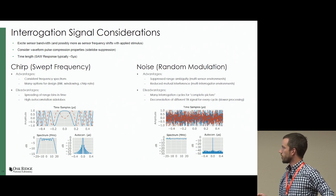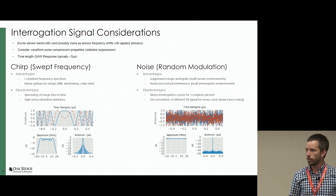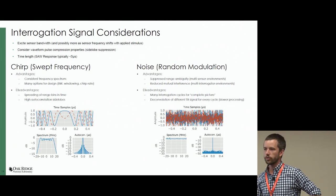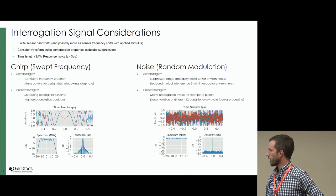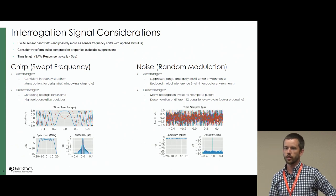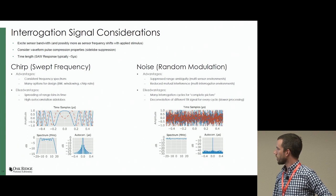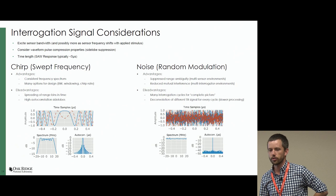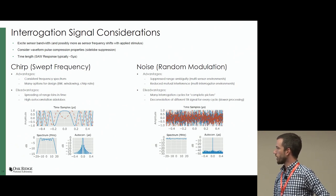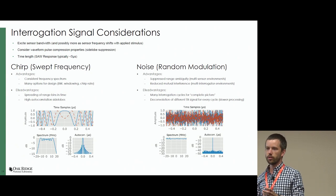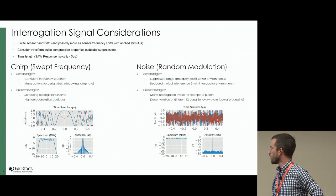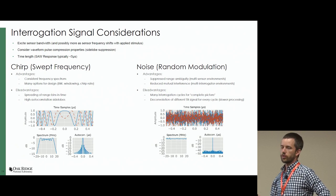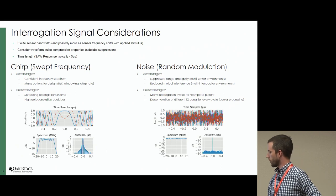There are interrogation signal considerations. The one typically done and that I've used in the past is just a swept frequency chirp — sweep a frequency that excites the entire sensor bandwidth, get back all that information, and process it. It's got a fairly flat frequency response but high autocorrelation side lobes, so post-processing can be kind of messy. The one we've implemented now is a noise radar type architecture — we use random modulation, you get suppressed range ambiguity, which is nice in a multi-sensor environment where sensors are in discrete time slots and frequency windows so they don't overlap and interfere with each other, and reduced mutual interference.